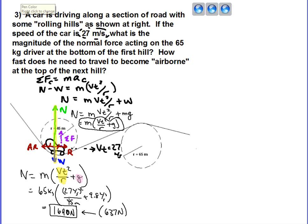Now, the second part of this question is how fast would they need to travel to become airborne at the top of the next hill? So let's consider what the FBD would look like over here. We see that the Earth is still pulling down with a force equal to the weight. Maybe this would be just the driver, not the car as a whole. But if the car is airborne, so is the person.